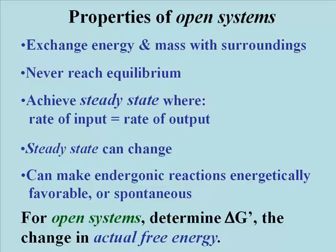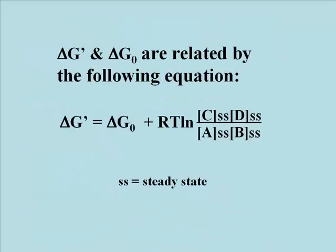For open systems, we measure the actual free energy change, or delta G prime. Delta G prime and delta G0 are related by the equation: delta G prime equals delta G0 plus R times T times the natural log of the steady-state concentrations of products — C and D — divided by the steady-state concentrations of reactants — A and B — where SS stands for steady state. Later, we'll have a chance to look at actual free energy changes when we examine glycolysis.